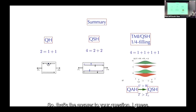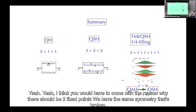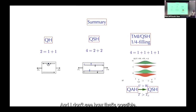To answer Ophelia's question: the reason there should not be two fixed points is that they break the same symmetry. I don't see how you could distinguish them or why two such fixed points would exist.